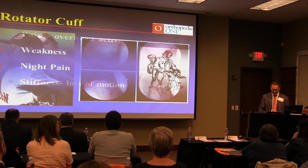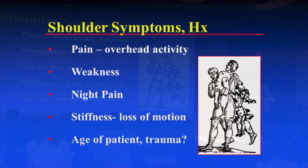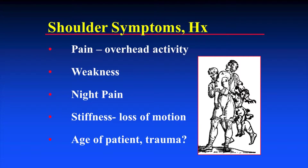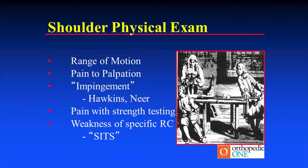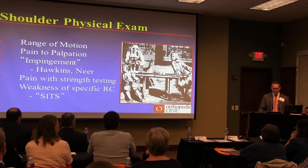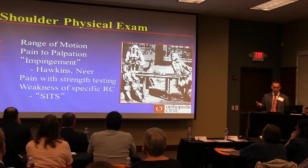Shoulder symptoms to assess include: pain with overhead activity, weakness, night pain, and stiffness. Two things that lead to stiffness fairly easily are arthritis and adhesive capsulitis — frozen shoulder. Always compare to the other side. Physical exam should assess motion compared to the other side, specifically abduction, external and internal rotation. Laying the patient down and comparing rotation bilaterally can help you pick up a subtle adhesive capsulitis you might otherwise miss.